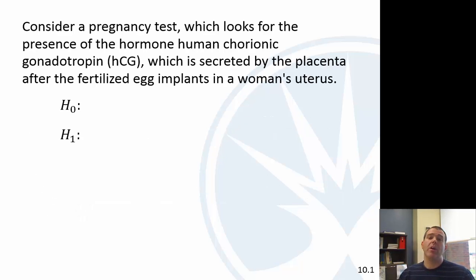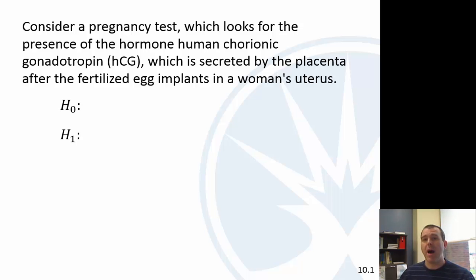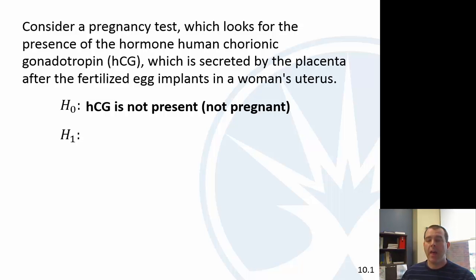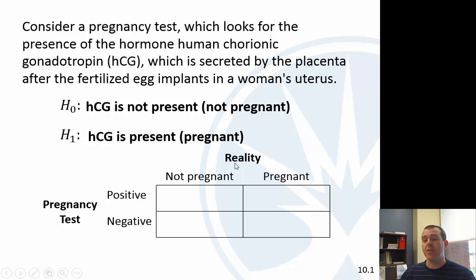Let's talk about errors using a pregnancy test as an example. Pregnancy tests look for a particular hormone — HCG — which is secreted once a fertilized egg implants on a woman's uterus; the hormone then appears in her urine and is detected by the test. The null hypothesis is that she's not pregnant — none of this hormone is present. The alternative hypothesis is that the hormone is there and she is pregnant. The pregnancy test has two outcomes: positive or negative. In reality, she's either not pregnant or she is pregnant.